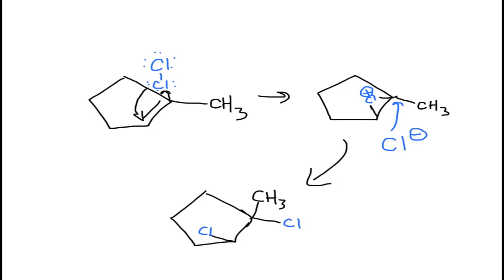Now let's look at the mechanism. First you have the Cl2 molecule. One carbon on the alkene is going to come and attack a chlorine, and it's also going to get attached to the other end of the alkene. What that forms is essentially a triangle. This triangle with the chlorine on it that has a positive charge is called the chloronium ion. If you were using bromine, it would be called the bromonium ion.